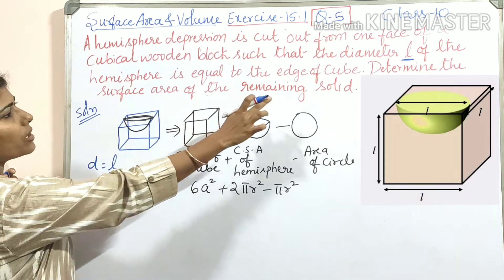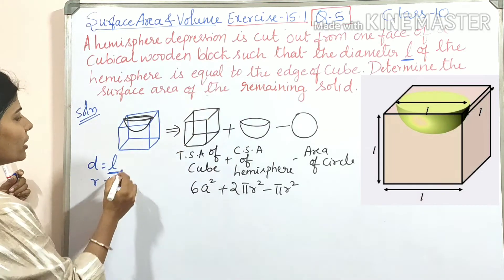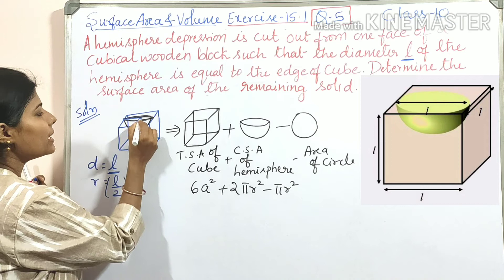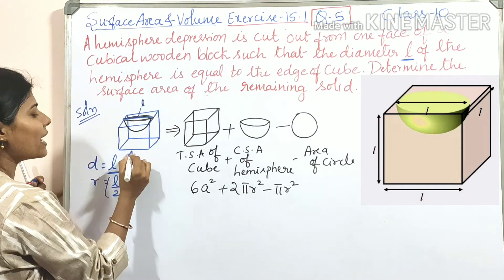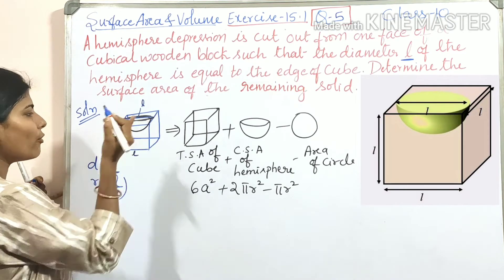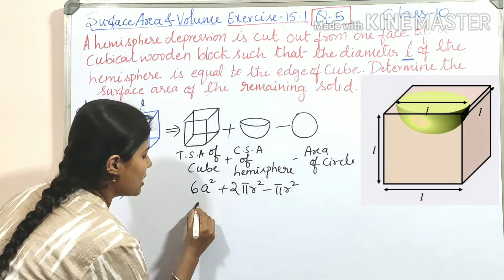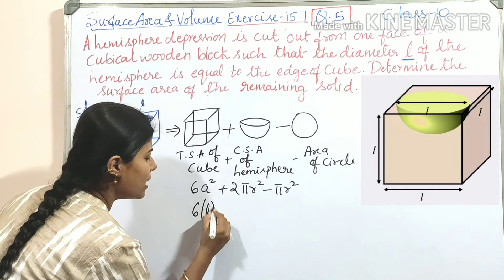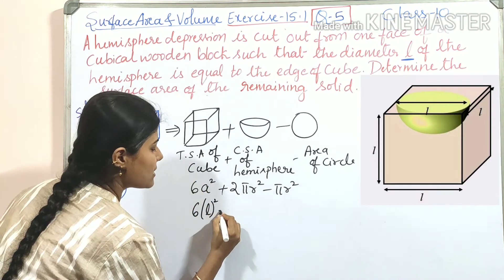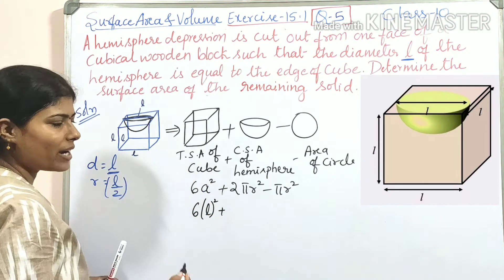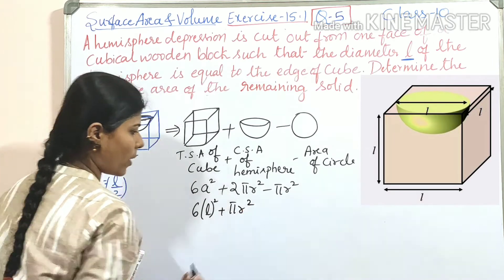So here the hemisphere determines surface area. Means here diameter itself is L. So side will be L. So side will be also L of this cube. So if we substitute, so 6A is nothing but L². Plus 2πR² minus πR². It is πR².